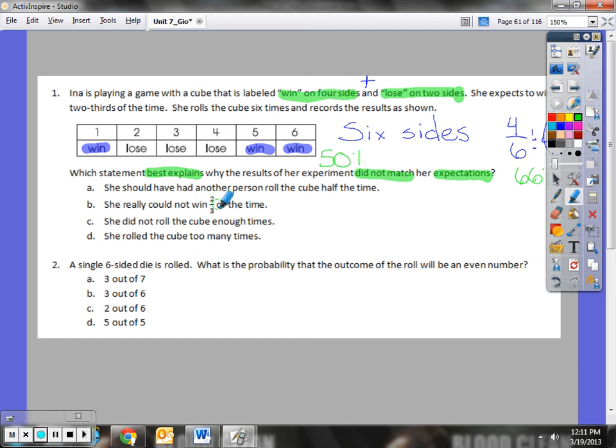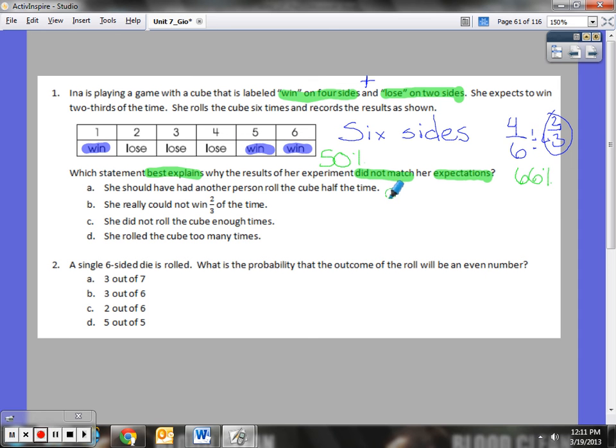She really could not win two-thirds of the times? Well, based on the math, if we have four out of six sides, we'd reduce that. She should have won two-thirds of the time, so that's not right.